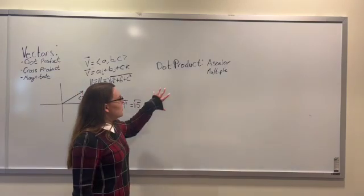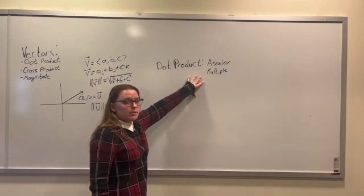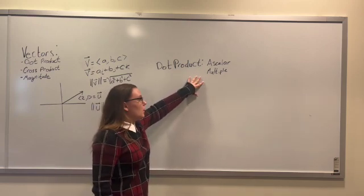So when we take the dot product between two vectors, we get a scalar multiple, which is just a fancy way of saying we get a number rather than a vector.